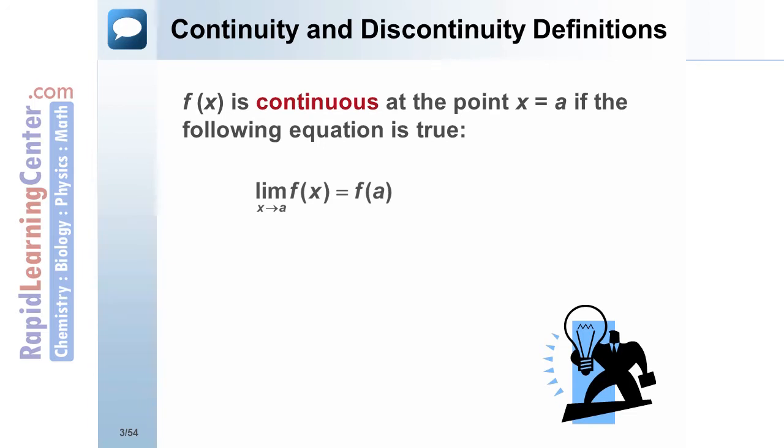So the limit of the function as x approaches the value a must equal the output of the function when it is evaluated at that same value a. This also means you must be able to plug in a to get an answer to the limit.